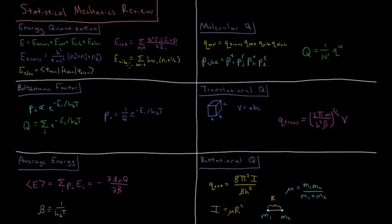The vibrational energy is determined by the harmonic oscillator model, which gives us that for all 3n-6 vibrational modes the energy is Planck's constant times the frequency times the quantum number n plus one-half. The electronic energy is given by the electronic Schrödinger equation, determined by the electronic wave function and the electronic Hamiltonian.